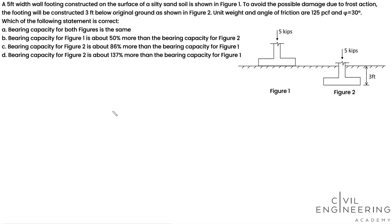Welcome back to Civil Engineering Academy, this is Jason. The question describes a five-foot wide wall footing constructed on the surface of a silty sand soil, as shown in figure one. To avoid possible damage due to frost action, the footing will be constructed three feet below original ground, as shown in figure two. The unit weight and angle of friction for this soil are 125 pcf and 30 degrees.